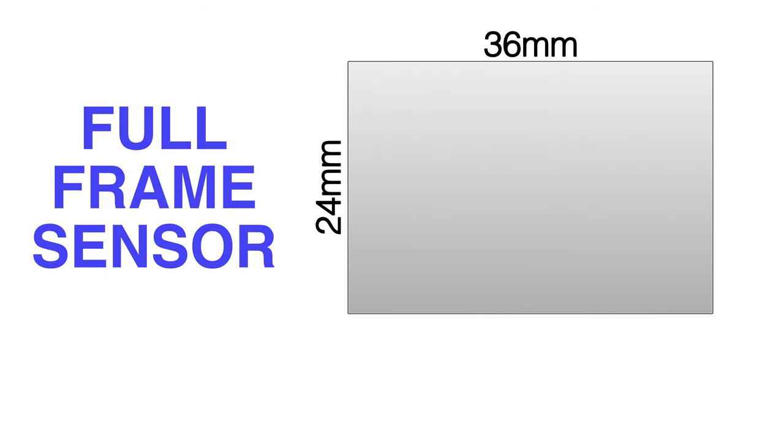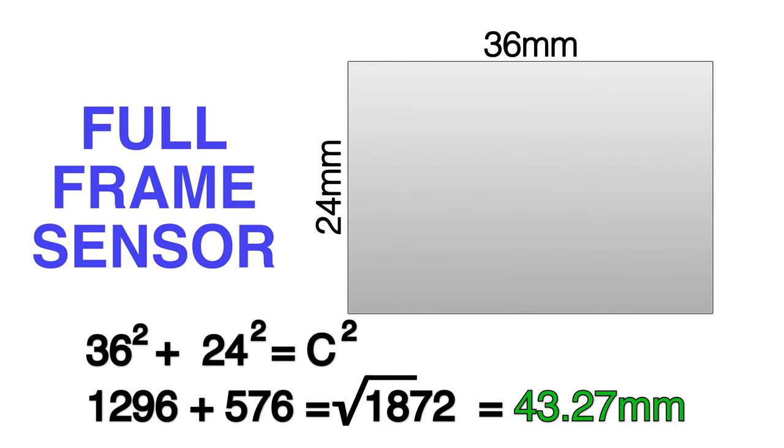Take for example 35 millimeter, 36 squared plus 24 squared, and if we go in and we actually do the math, we're given 43.27 millimeters for that diagonal.